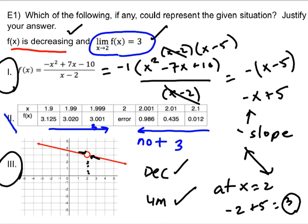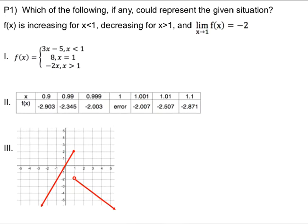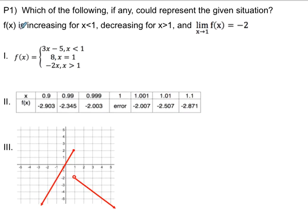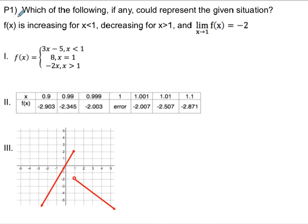Let's go ahead and do P1, and that'll be the end of this section. So for P1, I'm going to adjust my pen for a second. All right, let's see if this is slightly better. So same problem for P1. Which of the following, if any, could represent this given situation? Now, we have three qualities here. We have f is increasing before 1, f is decreasing after 1, and then the limit as we approach 1 is a negative 2.